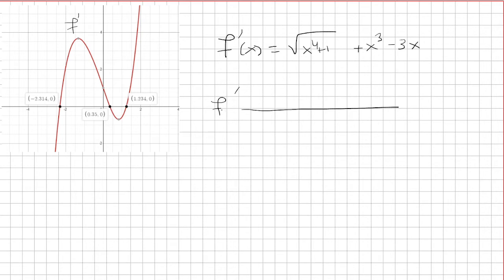For the first derivative, we're looking for when it's equal to 0 or undefined, and that's going to be at these three points here. So first, it's negative 2.314, 0.35, and 1.234.